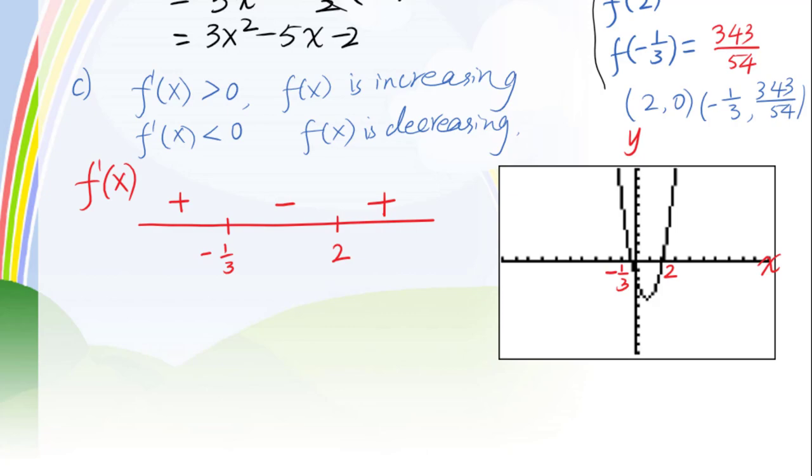So we draw this sign diagram. Negative 1 over 3, this is 2. Positive, negative, positive. This is for f prime of x, which means increasing, decreasing, and increasing. We will put negative infinity here, positive infinity here.